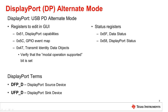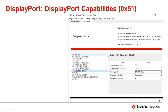There are DisplayPort specific terms used by the GUI. DFP_D refers to a device that is the DisplayPort source — a device that will be sending the data for DisplayPort. UFP_D refers to a device that is a DisplayPort sink — a device that will be receiving the DisplayPort data.